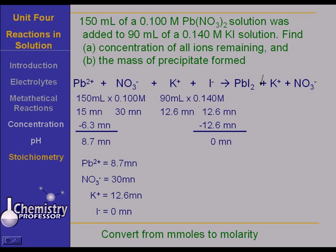Now, let's convert from millimoles to molarity. First, find the total volume. And what is it? It's 90 milliliters plus 150 milliliters is probably right at about 240 milliliters, give or take a tiny bit. But it's going to be right at about 240 milliliters.